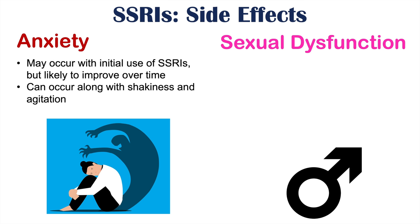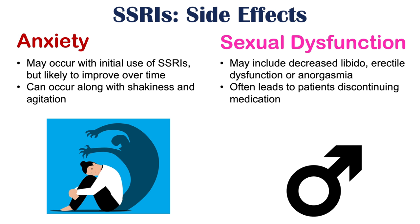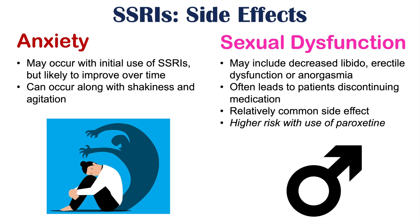Sexual dysfunction can also occur with SSRI use. This may include decreased libido, erectile dysfunction, or anorgasmia, and it often leads to patients discontinuing medication. This is actually a relatively common side effect of almost all SSRIs, but there is a higher risk with the use of paroxetine.